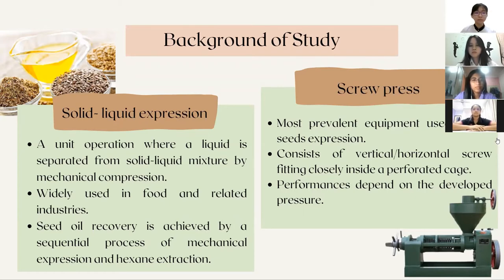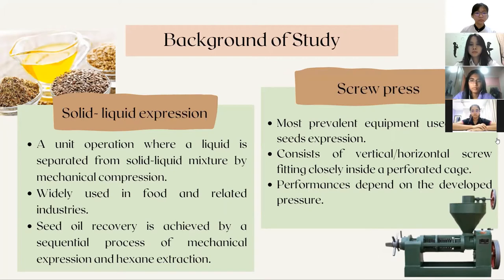In general, the mechanical expression of the oil seed is known as the best method to regain high quality virgin oil. The most prevalent equipment used to express oil from oil seeds is the screw press. It consists of a vertical or horizontal screw fitting closely inside a perforated cage where the liquid is expelled. The screw as well as the perforated cage are narrowed towards the discharge so that there will be an increase of pressure on the material. The performance of the screw press depends on the developed pressure, which is in contrast to the hydraulic press where the applied pressure can be set.